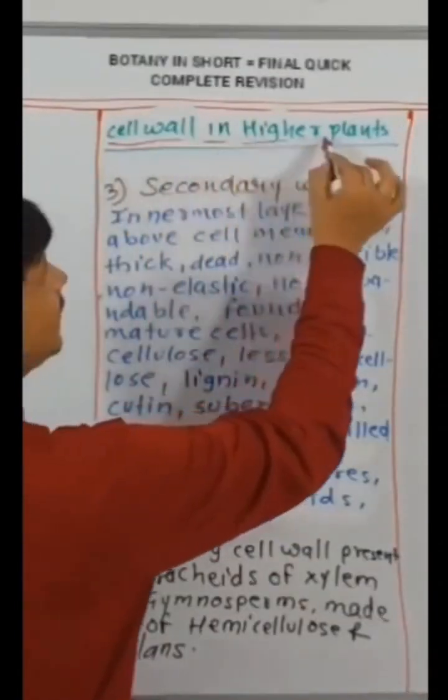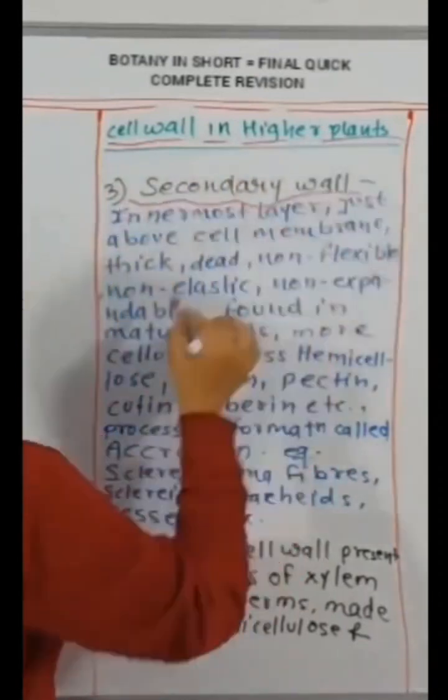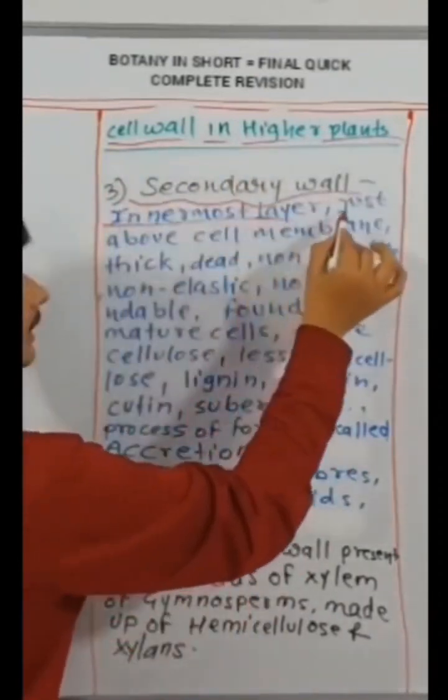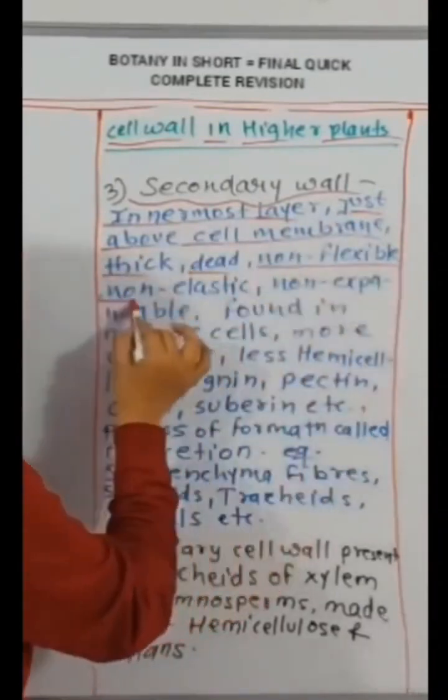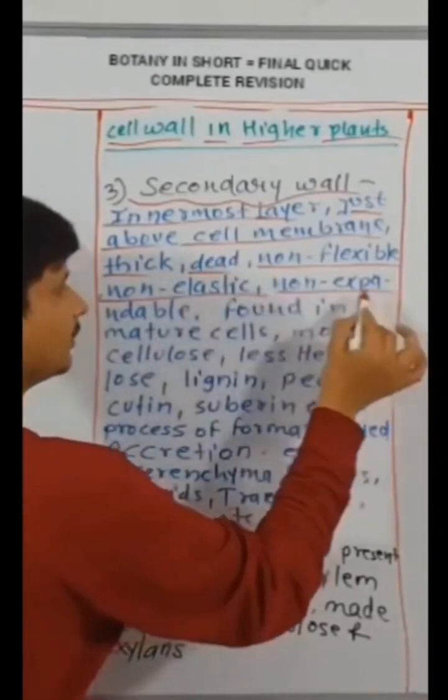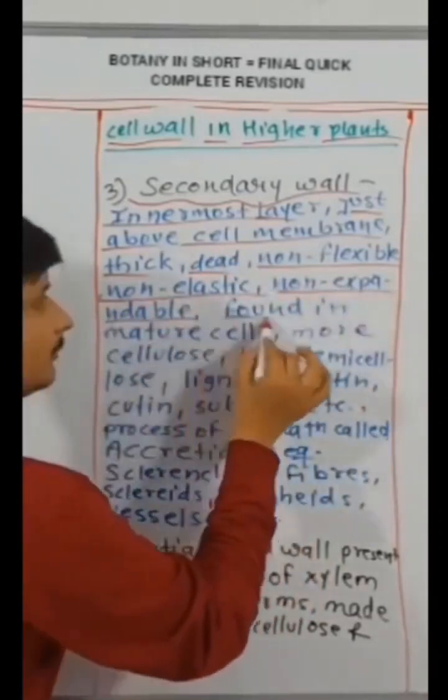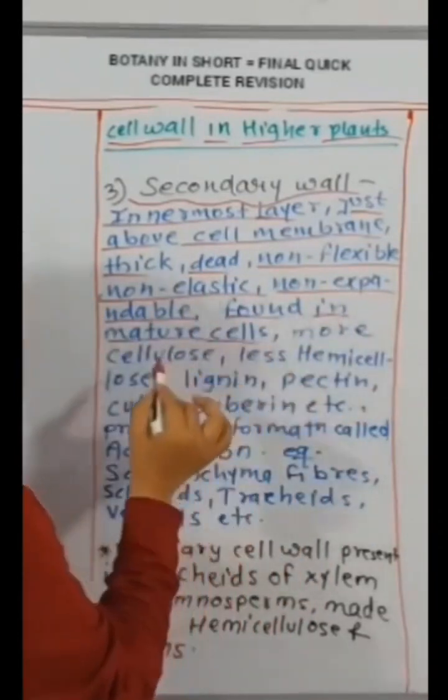Secondary wall: innermost layer, just above cell membrane. Thick bed, non-flexible, non-elastic, non-expandable. Found in mature cells.